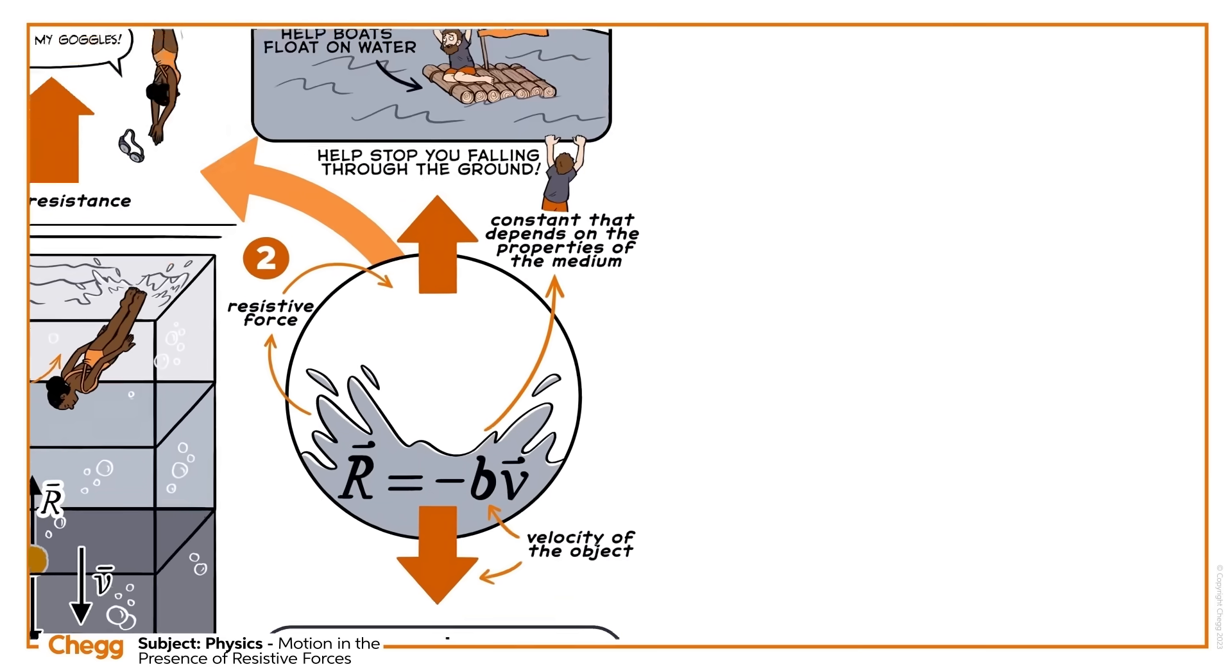When we're considering large objects falling at high speeds through air, the resistive force R varies as half the drag coefficient D times the density of air times the cross-sectional area of the object times the speed of the object squared. This is the crucial difference between small objects falling slowly through a medium and large objects falling at speed. The resistive force for large objects moving at speed is proportional to the square of the velocity.